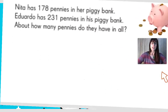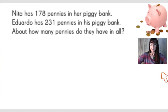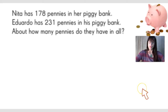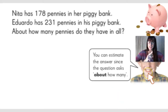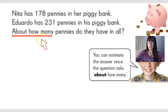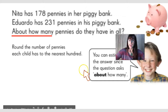Here we have a first problem. It says: Nita has 178 pennies in her piggy bank. Eduardo has 231 pennies in his piggy bank. About how many pennies do they have in all? Are we here to find the exact amount or just an estimate? In this case, you can estimate the answer since the question asks 'about how many.' When you see the words 'about how many,' they just want you to find the estimate.